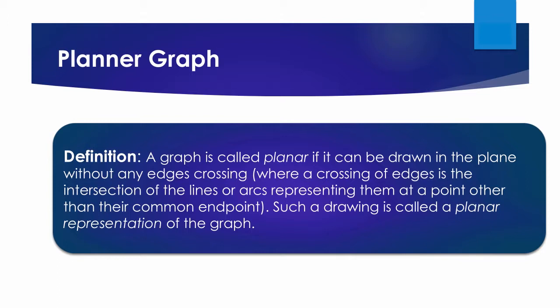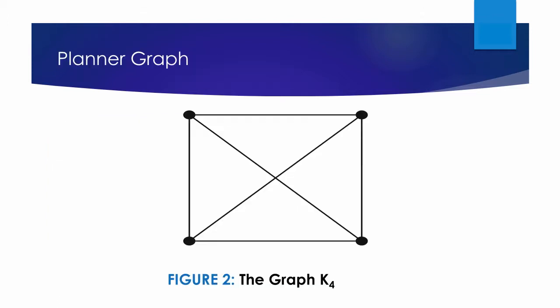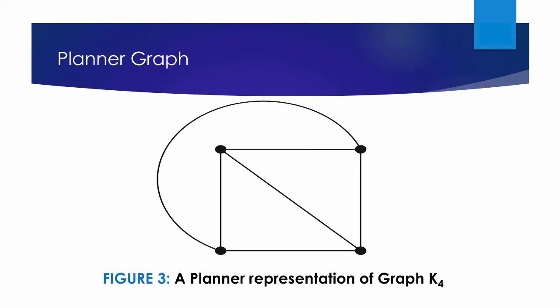A graph may be planar even if it is usually drawn with crossings, because it may be possible to draw it in a different way without crossings. For example, is K4, shown in Figure 2 with two edges crossing, a planar graph? The answer is yes — K4 is planar because it can be drawn without crossings as shown in Figure 3. The only change made is drawing one edge in a different way.